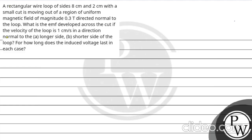Hello, let's see this question. A rectangular wire loop of sides 8 centimeter and 2 centimeter with a small cut is moving out of a region of uniform magnetic field of magnitude 1.3 Tesla directed normal to the loop. What is the EMF generated across the cut if the velocity of the loop is 1 centimeter per second — (a) in the direction normal to the longest side and (b) to the shorter side? For how long does the induced voltage last in each case?